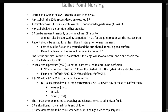Blood pressure is an indicator of the patient's cardiovascular perfusion. It includes two numbers: the systolic, which is the top number, and the diastolic, which is the bottom number. A normal systolic is below 120 and a normal diastolic is below 80 — these are adult numbers. A systolic above 120 but below 130 is considered elevated. A systolic above 130 or a diastolic above 80 is considered hypertension.